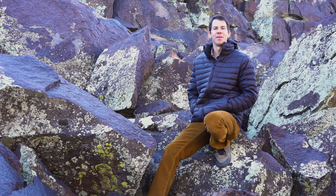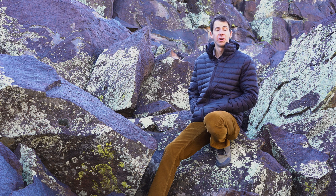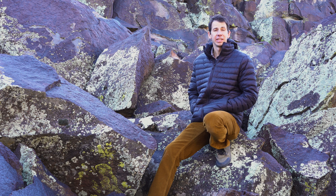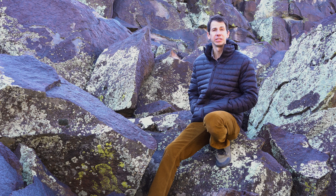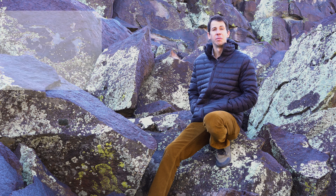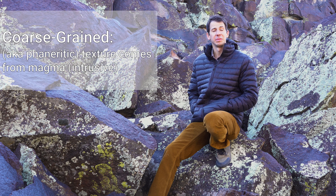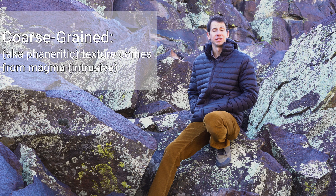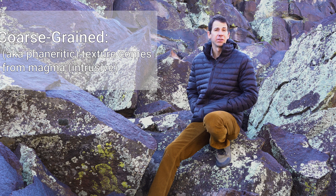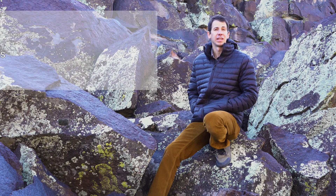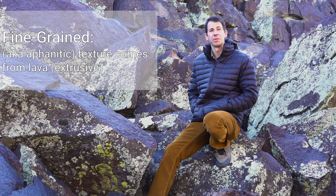The two most common ways that igneous rocks are described is through their texture or through their composition. When we discuss igneous rock texture, we are basically referring to the size of the crystals within that igneous rock. More coarse-grained or larger crystals means that the rock cooled down slowly or came from magma. Smaller crystals or finer-grained texture means that the rock cooled very quickly or came from lava.